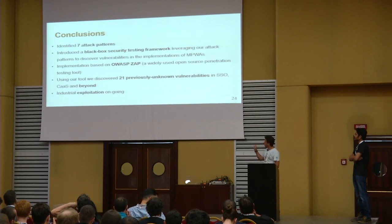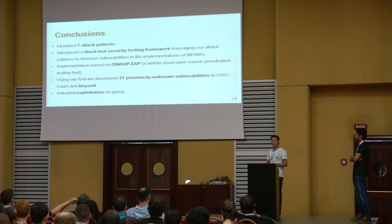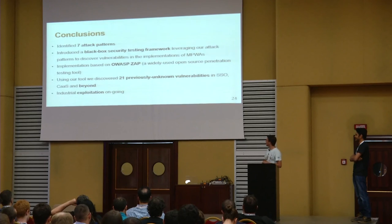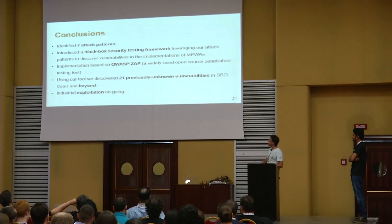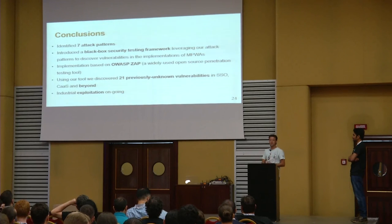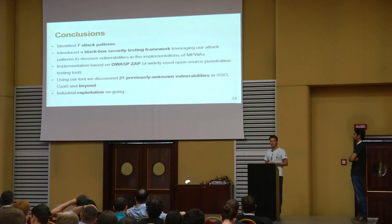In conclusion, we have identified seven attack patterns. We have a prototype for black-box security testing of logical flaws. It is based on OWASP ZAP. We were able to discover quite a number of new unknown vulnerabilities. If you are interested in the technical details, read the paper or reach out to us — we are here for the entire conference. Industrial exploitation is under way.